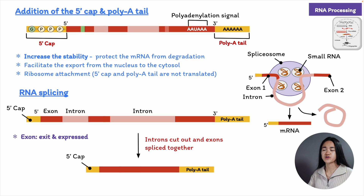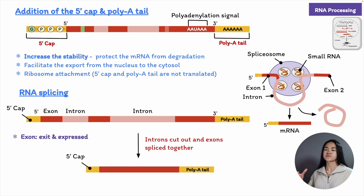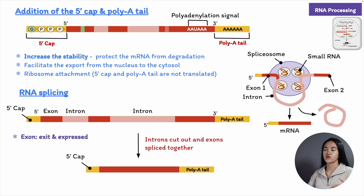Some pre-mRNAs undergo alternative splicing to produce different mRNAs and proteins from the same gene. We can produce many different proteins from the same gene simply by skipping some exons or including them, though their order cannot be rearranged. That's why the presence of introns is important — even though they aren't expressed, they allow different proteins to be produced. The small RNA molecules in the spliceosome that catalyze these reactions are known as ribozymes — just like proteins, RNAs can also act as catalysts.